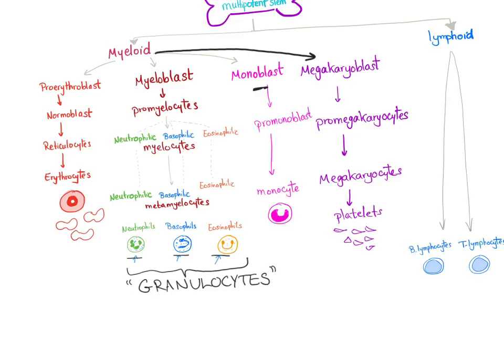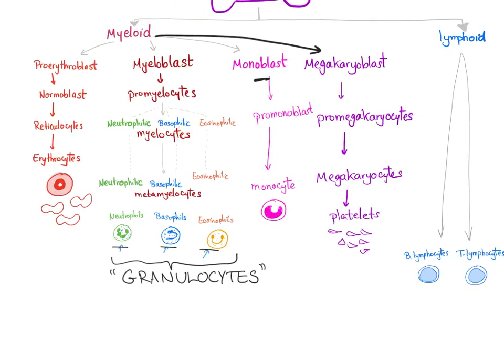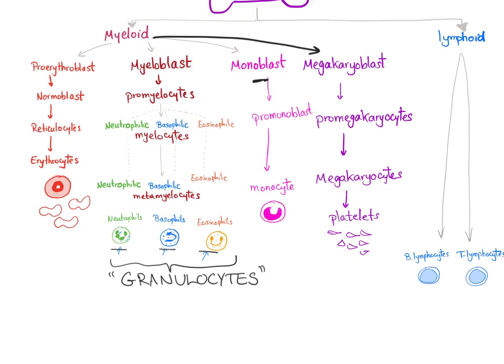The megakaryoblast will change into promegakaryocyte, then megakaryocyte, and then platelets.